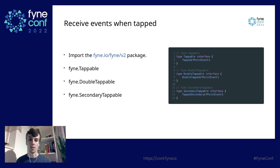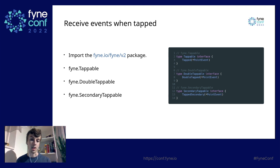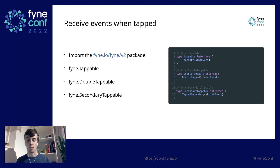For basic interfaces, if we want our widget to receive events when tapped, we import the fyne.io/fyne/v2 package. We have fyne.Tappable with a Tapped method that is automatically called when the widget is tapped, fyne.DoubleTappable with a DoubleTapped method called when tapped twice in succession, and SecondaryTappable whose TappedSecondary method is called when the mouse right-clicks or on a long press on a touch screen.